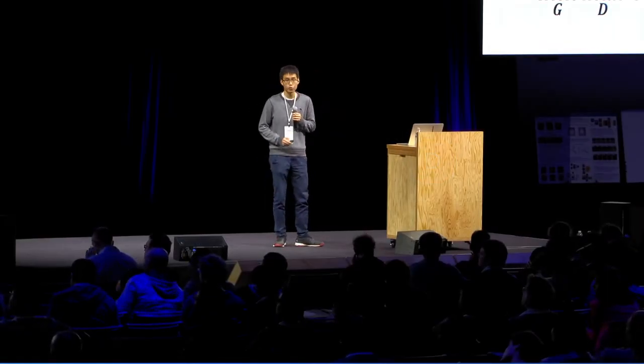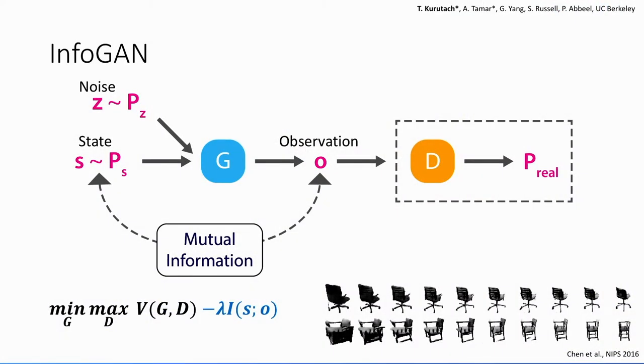The random noise that we had before and the state, where the state will be encouraged to capture the semantic in the observation through the mutual information. So adding this mutual information term to the loss, and Chen et al. have shown that if we interpolate one of the dimensions in the state, you can get interpolation in the size of the chairs.